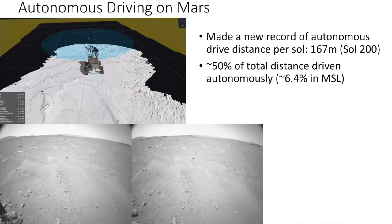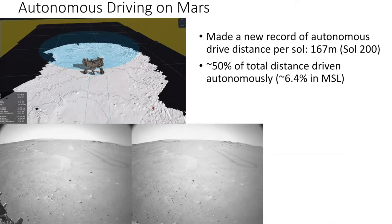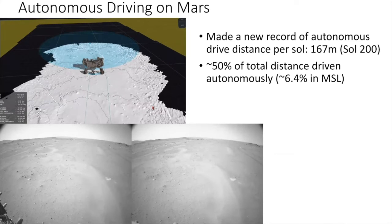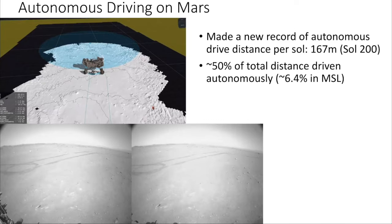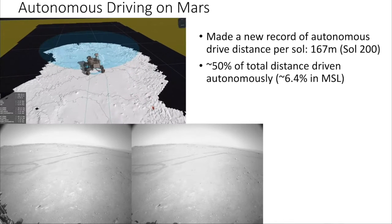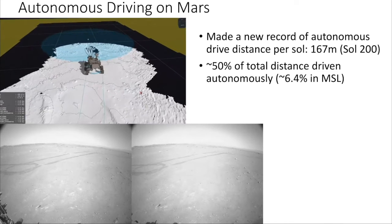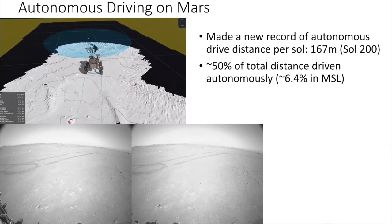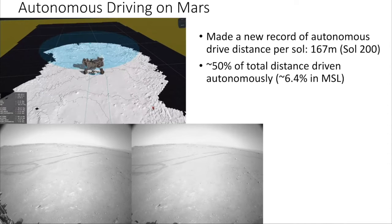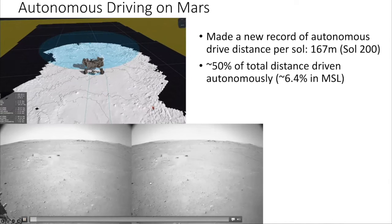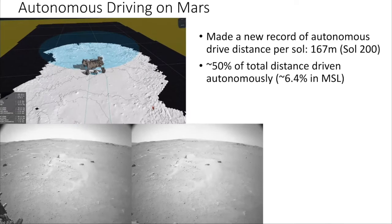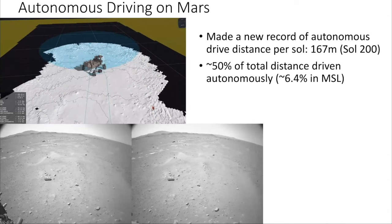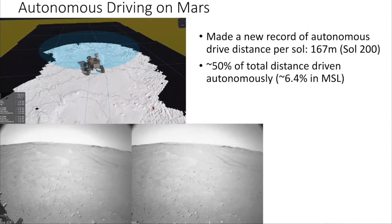My biggest contribution to this project was the autonomous driving algorithm I wrote with my colleagues. We've been driving on Mars autonomously for about 15 years, but we made substantial enhancements. Now the rover can drive a few hundred meters per sol — as opposed to tens of meters in previous rovers — fully autonomously. So far 50% of the total distance driven has been autonomous, compared to 6.4% in the previous rover mission. It uses stereo vision to identify obstacles and create a traversable 3D map for path planning.